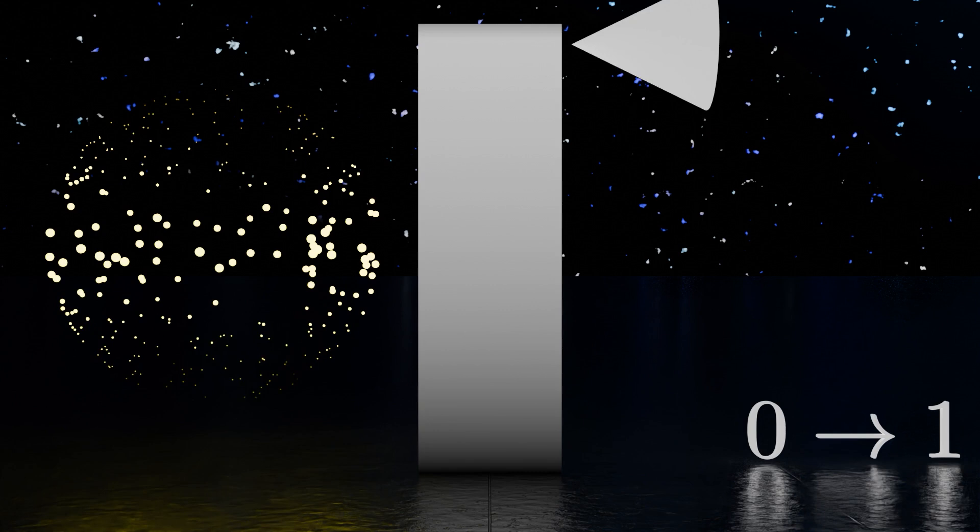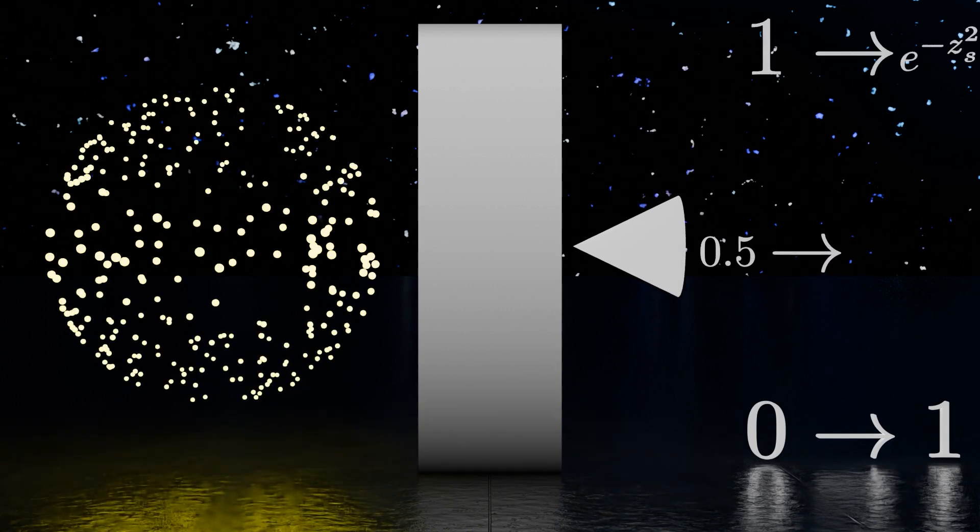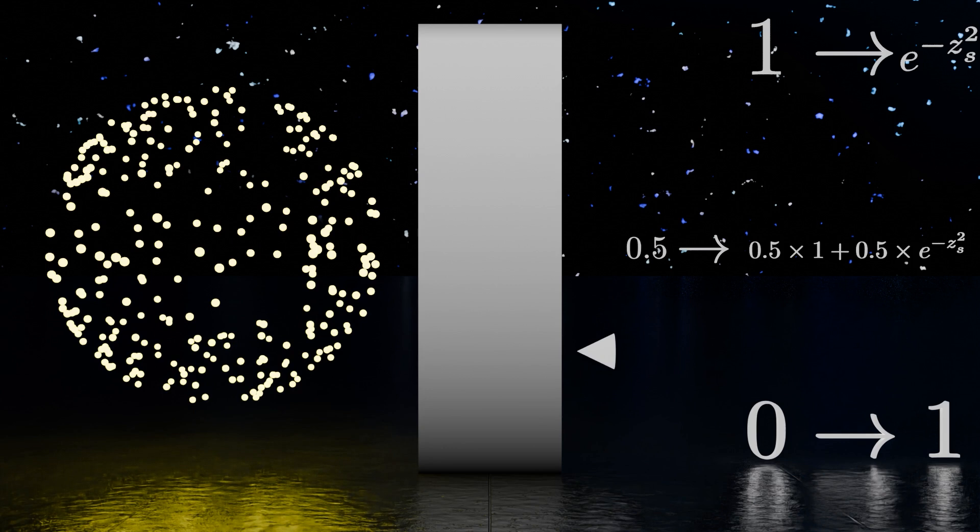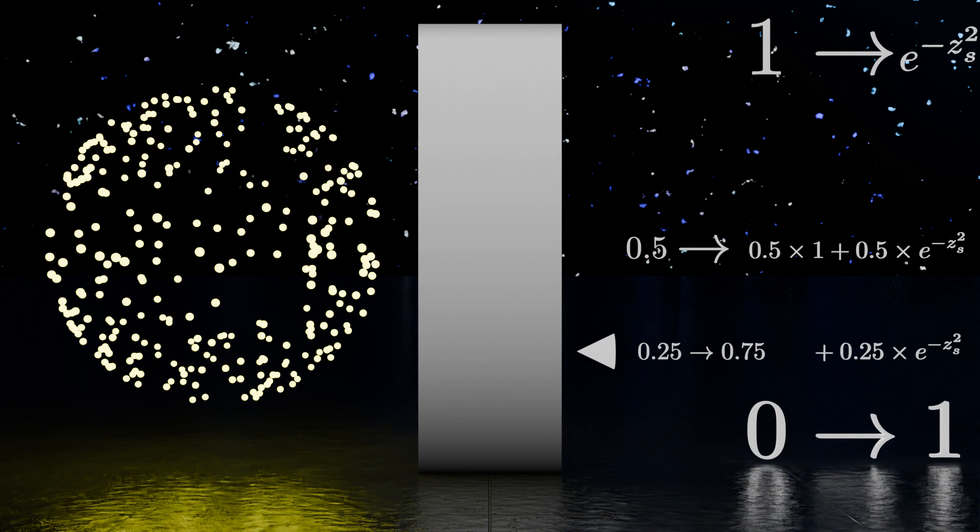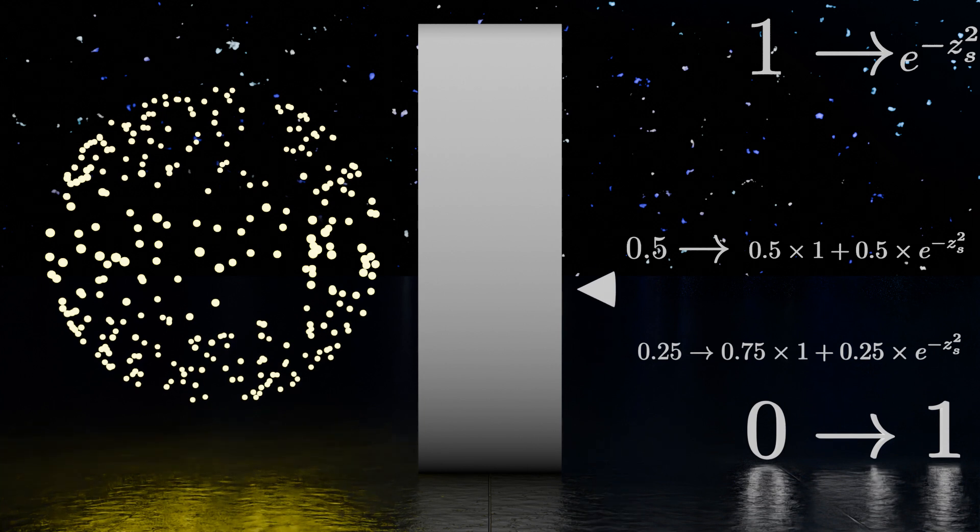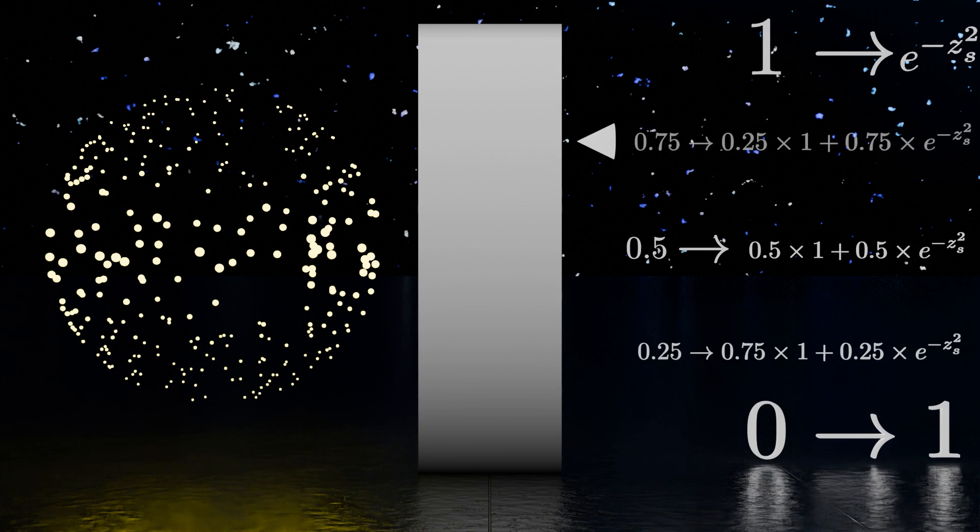Well that's simple, at 0 we just need to plug in 1, because if the existence of everything is 1, then we get a sphere, it's equally existent everywhere. At 1 we'd like to plug in our fancy Gaussian function, but what about 0.5? Well at 0.5 we'd like to plug in half of 1, plus half the Gaussian, like this. I don't think I need to explain much there, we're just combining the half of 1 and half of the other, but what about 0.25?